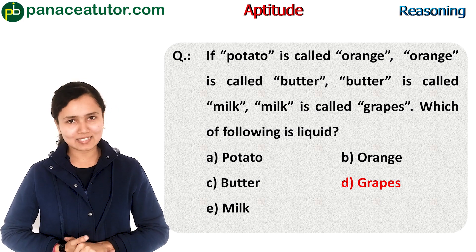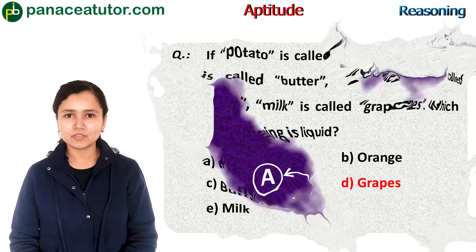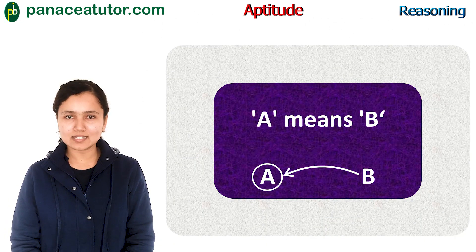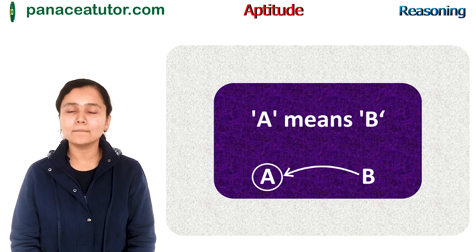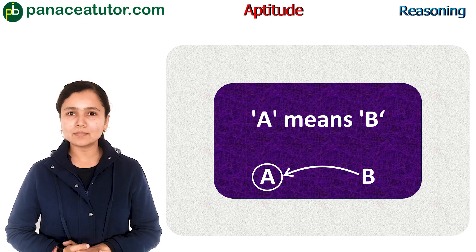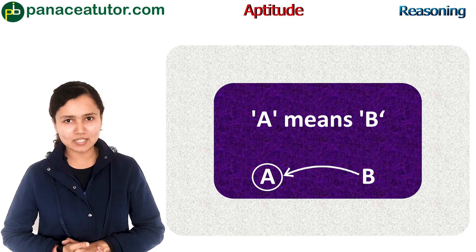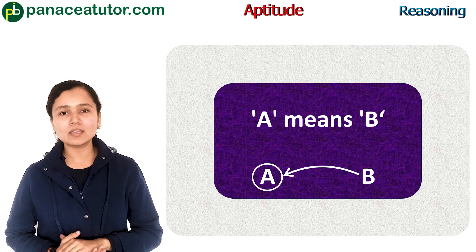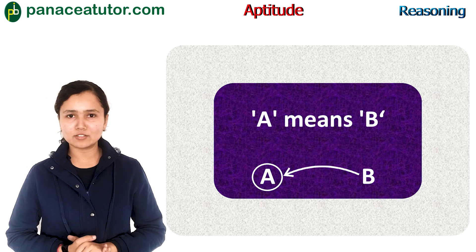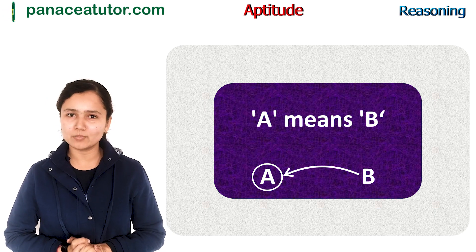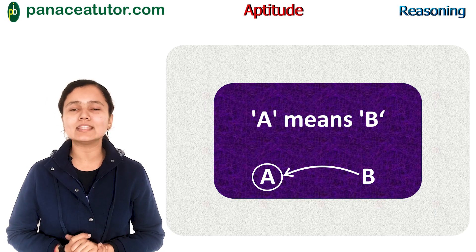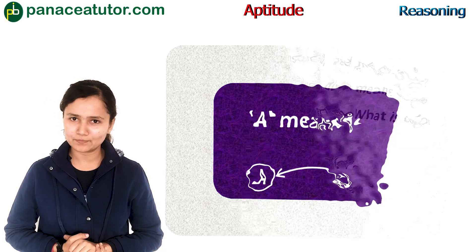It's that simple. Now let's discuss the second word: 'means'. When we say A means B, we have to move in the reverse direction, and the answer will be the first one, that is A.